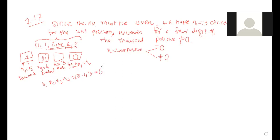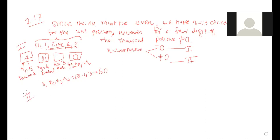Combining the two cases: Case 1 gives 60 even four-digit numbers (unit = 0), and Case 2 gives 96 even four-digit numbers (unit ≠ 0). Total = 60 + 96 = 156 even four-digit numbers. That is the solution to Example 2.17.